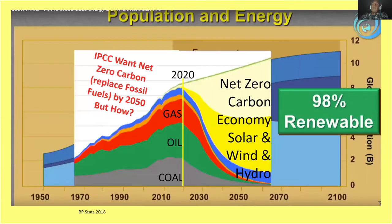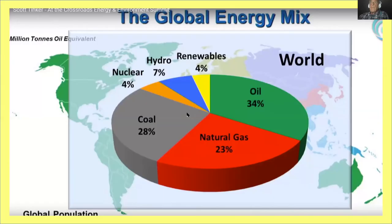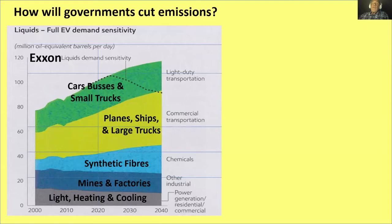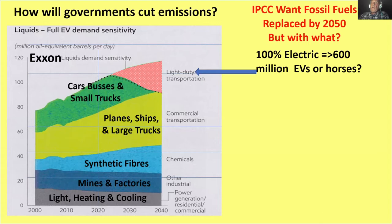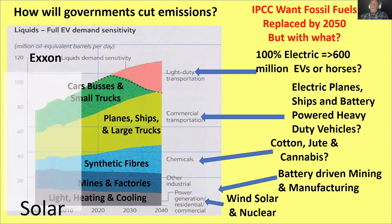In order to get net zero carbon, we would have to go from the current trajectory of coal, oil, and gas to something completely different. Solar and wind only provide 4% of the energy used on the planet today. They'd have to replace all oil, all natural gas, all coal. Even if you replaced all small cars and buses with electric vehicles, you still haven't touched planes, large trucks, ships, synthetic fibers, mines, and factories. Can all of that be replaced by solar, wind, hydro, and nuclear — which many people don't like?